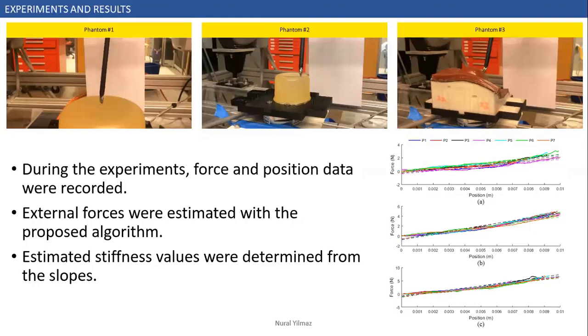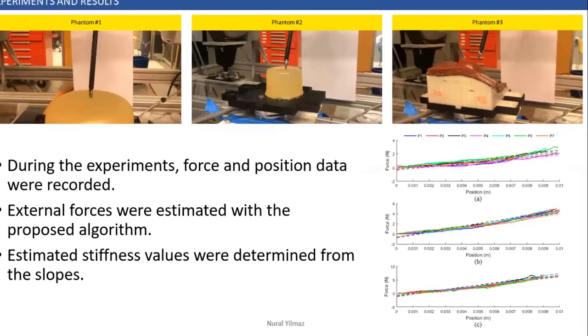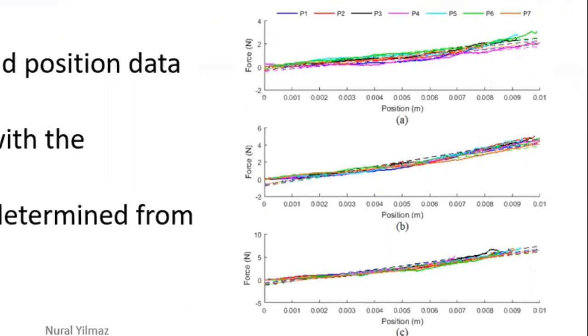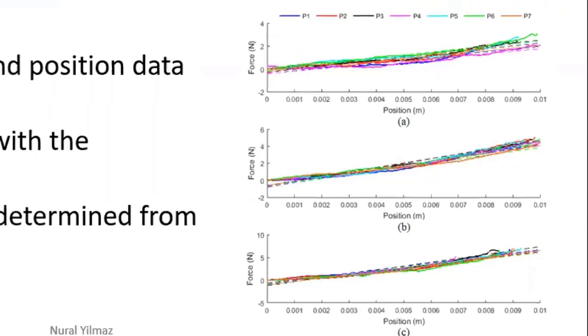During this experiment, the robot touched seven random points on each phantom and force and position data were recorded. Then we estimated external forces using our method and we plotted them with respect to changes in tool position as shown in this figure. Stiffness can be determined from the slope of this plot.